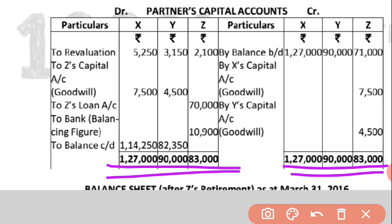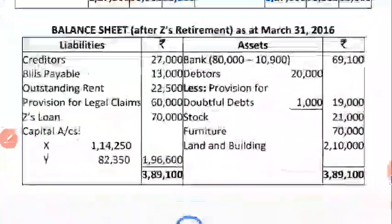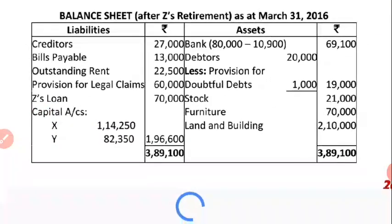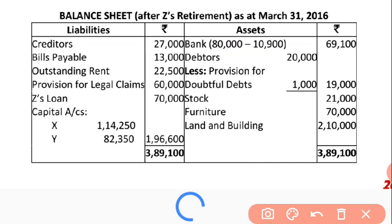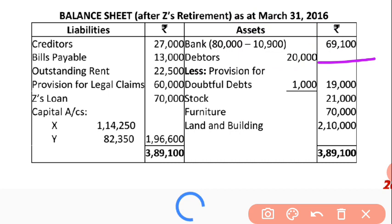Now we will prepare the balance sheet. There is a change in the bank balance: the bank balance was 80,000, but 10,900 was paid to Z, so I subtract 10,900 and the new bank balance is 69,100.